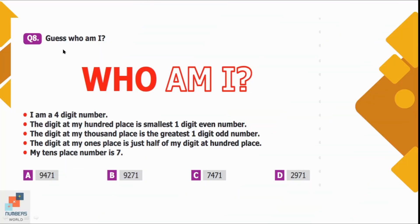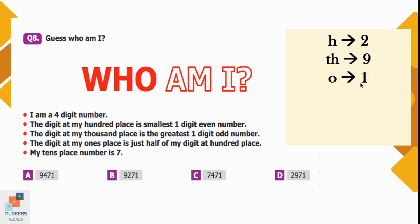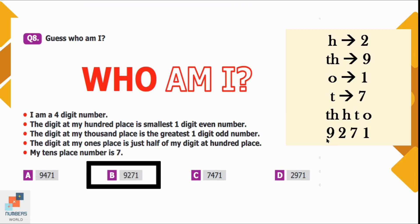Question number 8: Guess who am I? I am a 4-digit number. The digit at my 100s place is the smallest 1-digit even number, which is 2. The digit at my 1000s place is the greatest 1-digit odd number, which is 9. The digit at my 1s place is just half of my digit at the 100s place, so half of 2 is 1. My 10s place digit is 7. Arranging the place values: 1s=1, 10s=7, 100s=2, 1000s=9, giving the final number 9271. Option B is correct.